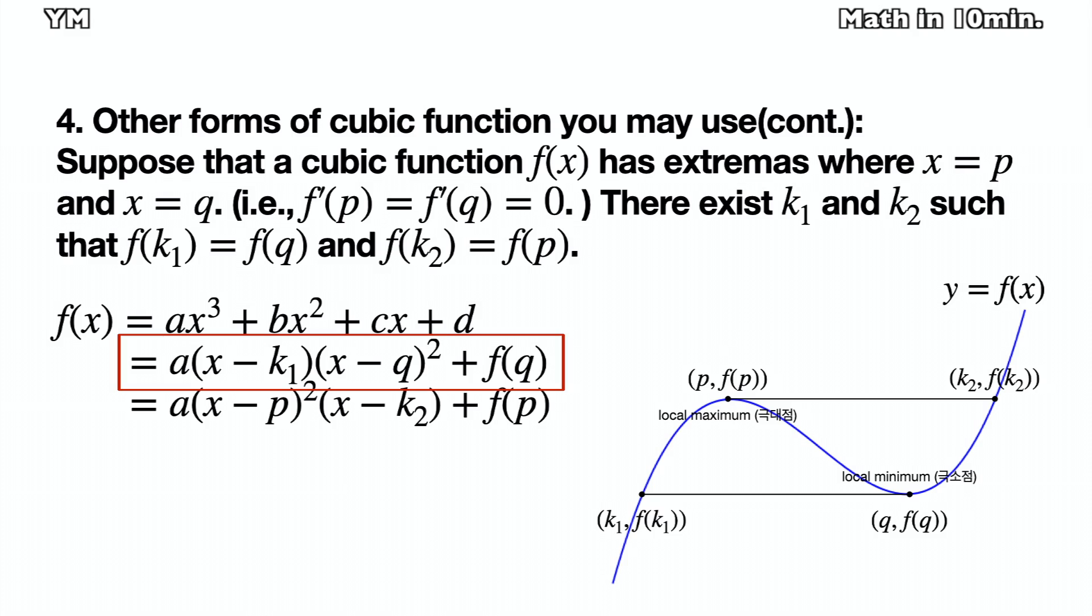For example, let's look at the second one. If f(k1) and f(q) were 0, then k1 and q must have been x-intercepts. Then the function f(x) just crosses the x-axis at x equals k1, and it also meets x-axis at x equals q, but does not cross. That's why the degree of (x - k1) is 1 and (x - q) is 2. Then I believe that you can understand the below equation as well.